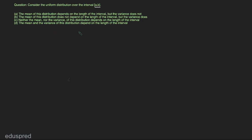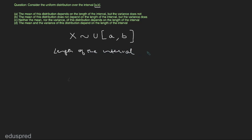We are given that a random variable X has a uniform distribution over the interval a comma b, and we have to say whether the mean and the variance of the distribution depend on the length of the interval or not. The length of the interval is equal to b minus a.